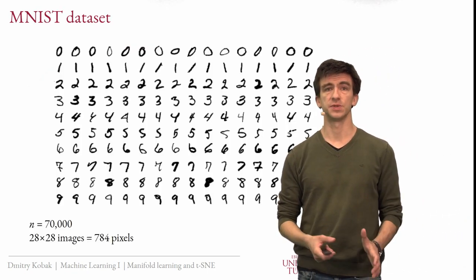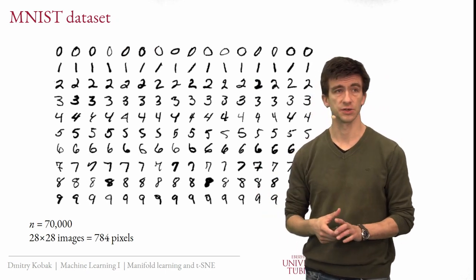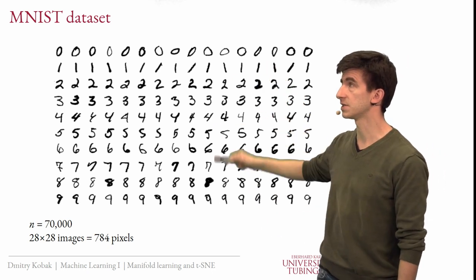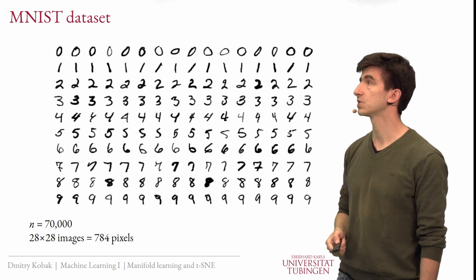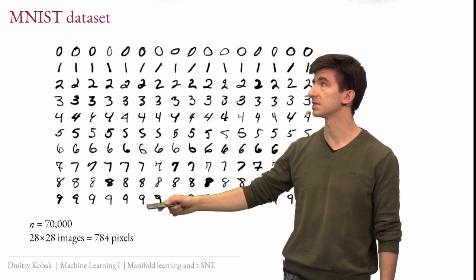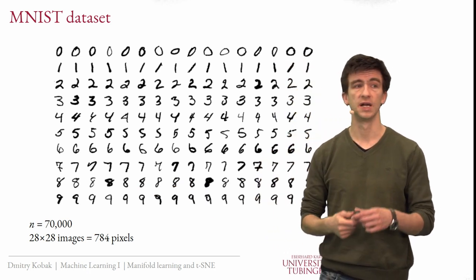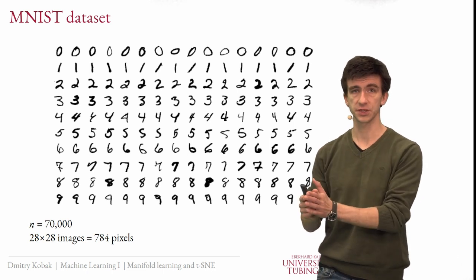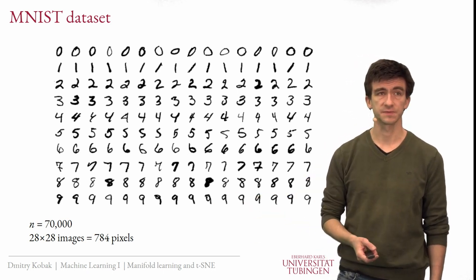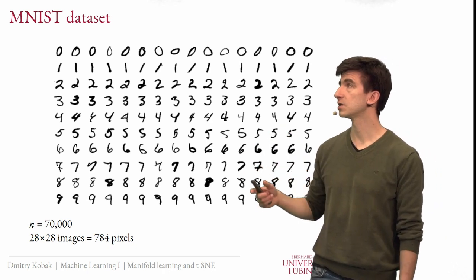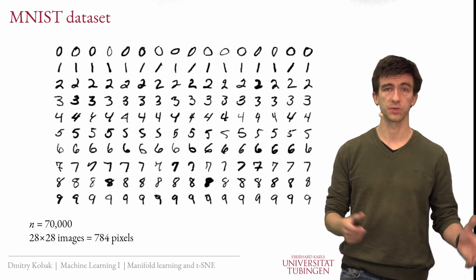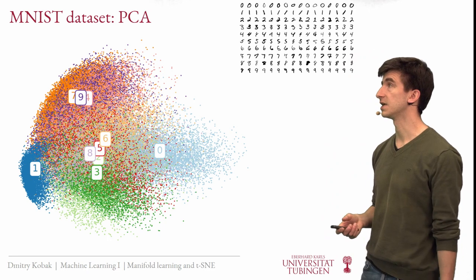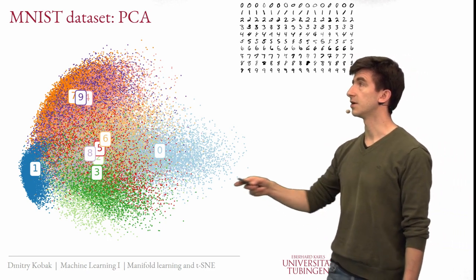Most of the time today I am going to be talking about the MNIST dataset, a classic machine learning dataset consisting of handwritten digit images. There are 10 different digits, 70,000 total images, each 28 by 28 pixels — so 784 pixels are our features and 70,000 is the sample size. We want to visualize this in two dimensions. The method we already discussed is PCA, so let me show you how the PCA of this data looks.